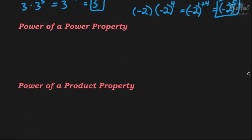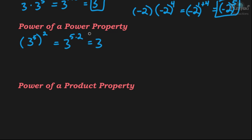The next property is the power of a power property. This applies when a number already has an exponent and you want to raise the whole thing to another exponent. For example, 3 to the 5th power raised to the 2nd power. The property says to multiply the exponents. So we have 3 to the 5th times 2, and since 5 times 2 is 10, the answer is 3 to the 10th power.